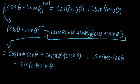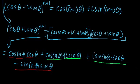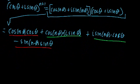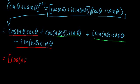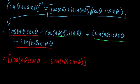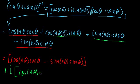Now let's group the real and the imaginary parts together. This term is real, this term is real; this term is imaginary because we have an i, and this term is imaginary because we have an i. So we say this whole thing equals cosine n theta times cosine theta minus sine n theta times sine theta, plus i times the quantity cosine n theta times sine theta plus sine n theta times cosine theta.